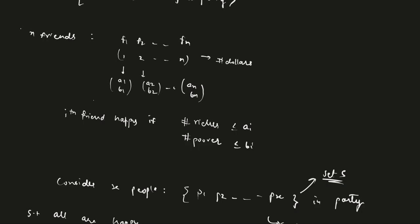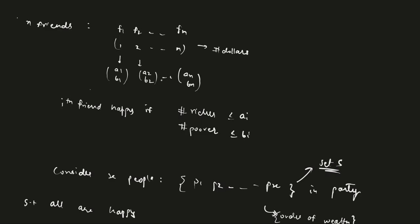Assuming you've had a look at the statement, we'll proceed to the solution. We have n friends and ai represents the maximum number of people that can be richer than fi and bi represents the number of people that can be poorer than fi such that fi remains happy if he is called to the party.